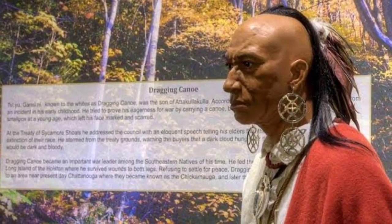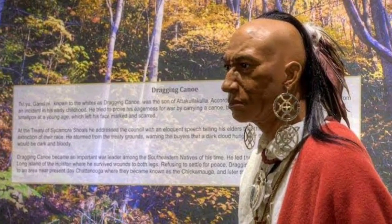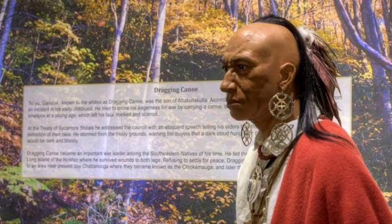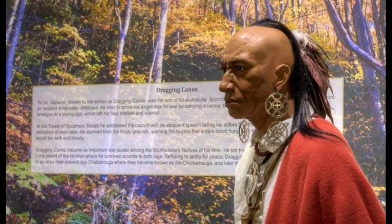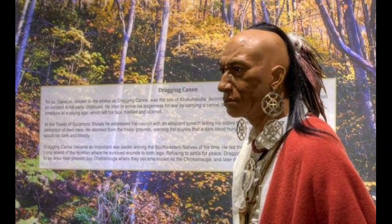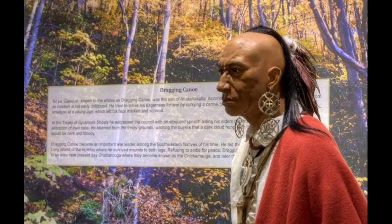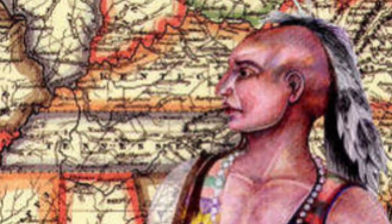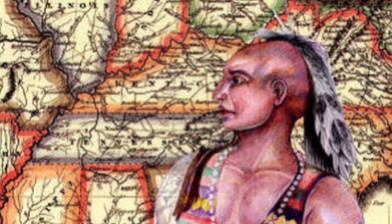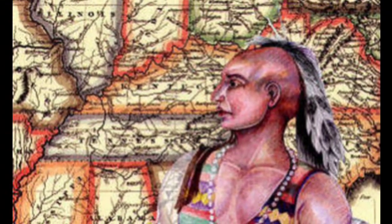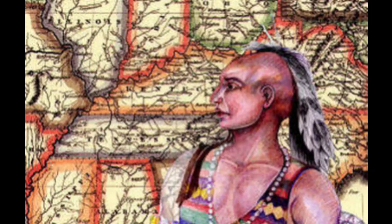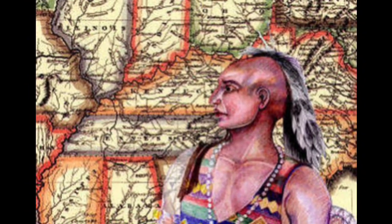The American Revolutionary War was a defining moment not only for the American colonies and Great Britain, but also for various indigenous nations, including the Cherokee. As a significant indigenous group in the southeastern United States, the Cherokee faced complex choices and profound consequences during this tumultuous period. This article explores the role of the Cherokee in the American Revolution, their alliances, conflicts, and the lasting impact on their society and sovereignty.